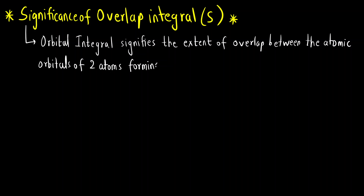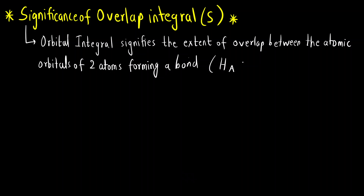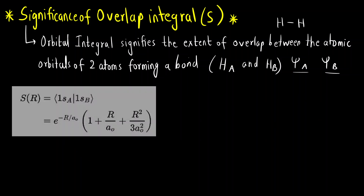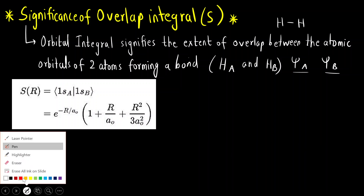Here, which are the two atoms? Both are hydrogen atoms forming a bond — one is called HA and another is called HB. Both these atoms will have separate wave functions that we represent as psi A and psi B, which are the wave functions of the atomic orbitals of the two hydrogens overlapping to form a hydrogen–hydrogen bond. Mathematically, this is the equation for the overlap integral.